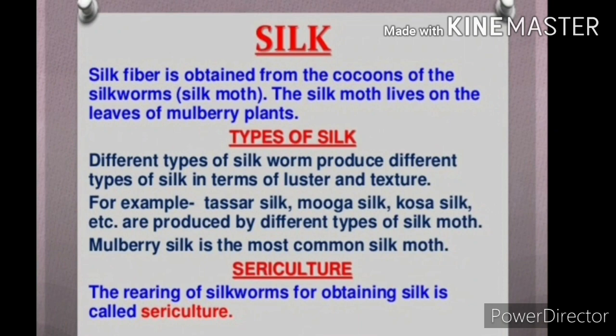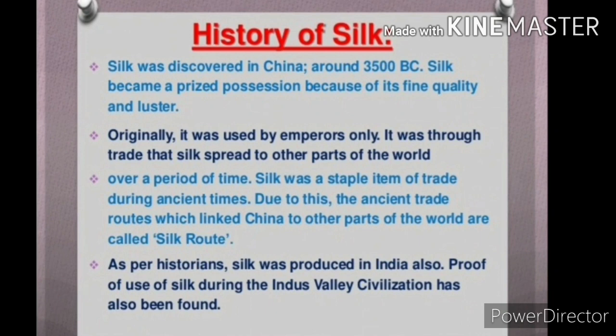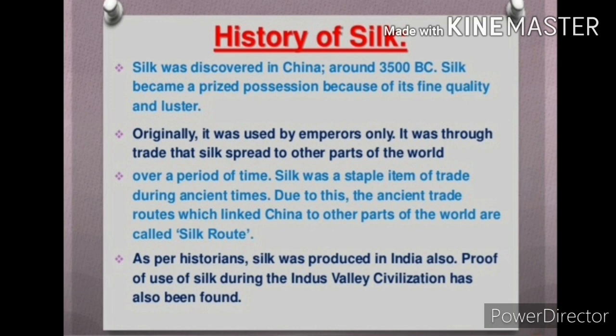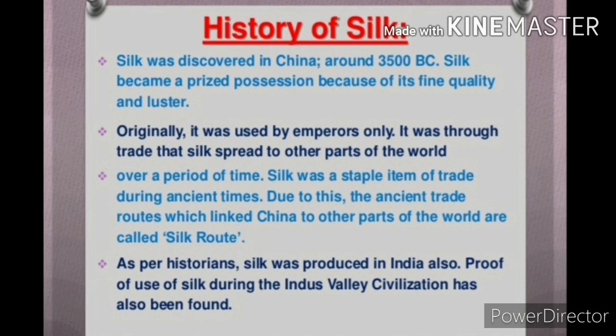History of silk: Silk was discovered in China around 3500 BC. It became a prized possession because of its fine quality and luster. Originally it was used by the Emperor only. Through trade it spread throughout the world. Over a period of time, silk was a staple item of trade during ancient times. Due to this, the ancient trade routes which linked China to other parts of the world are called the Silk Route.